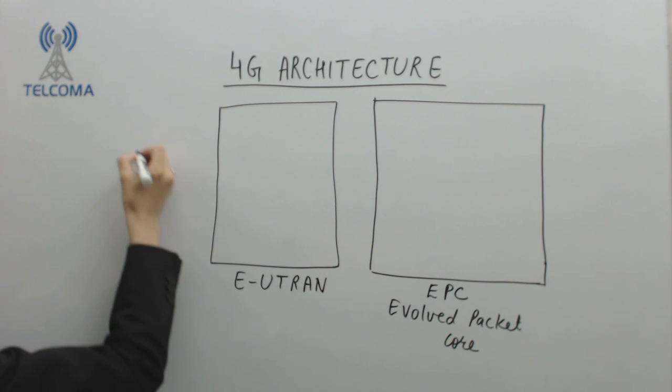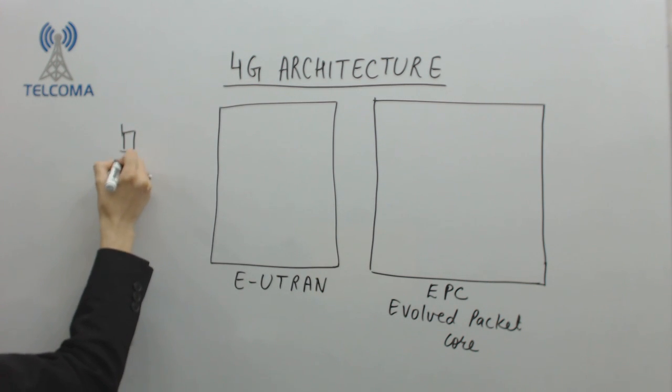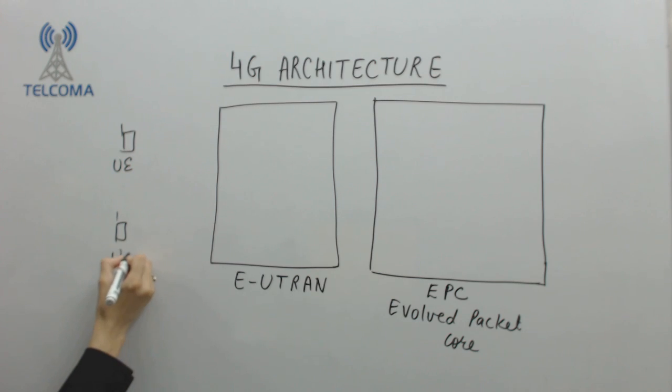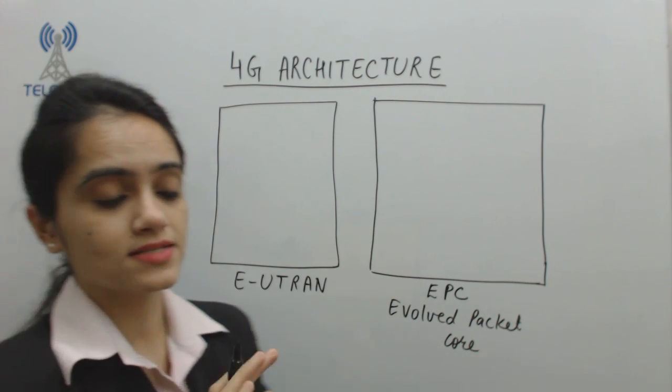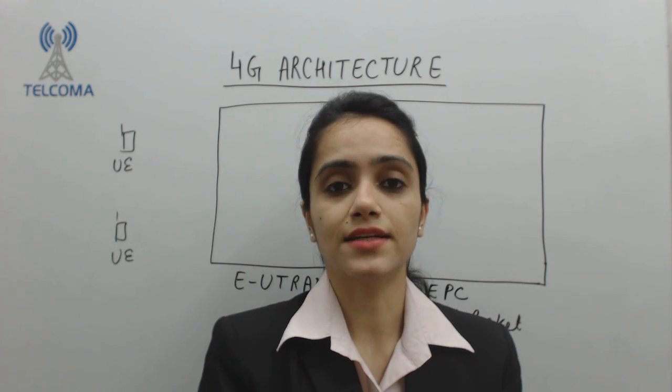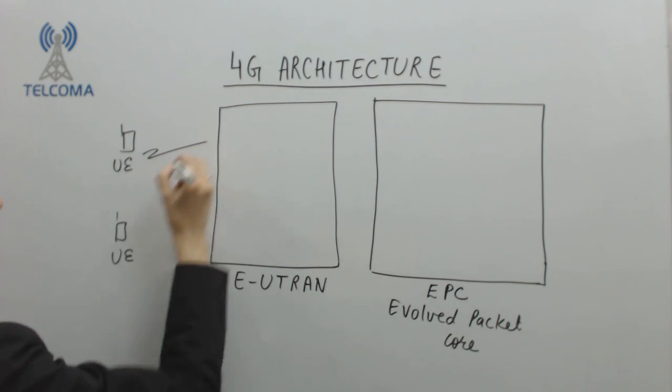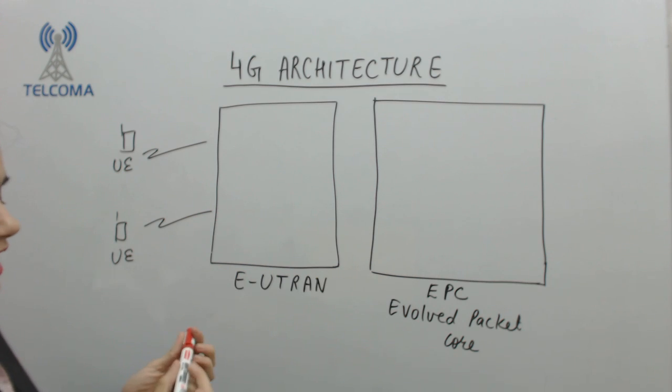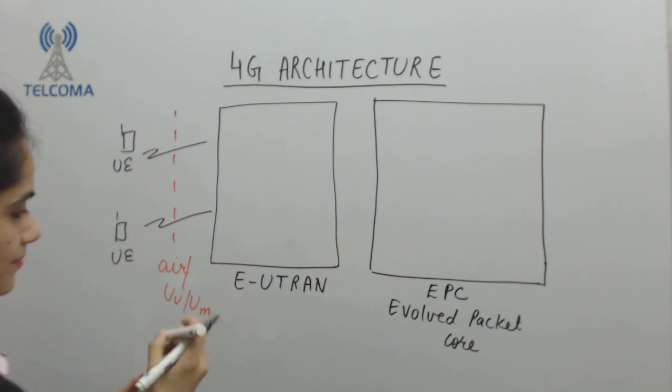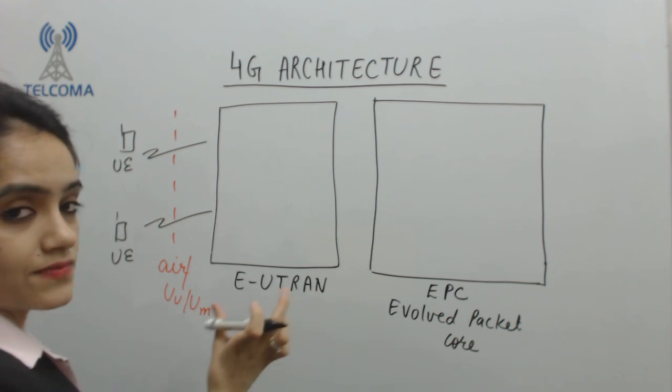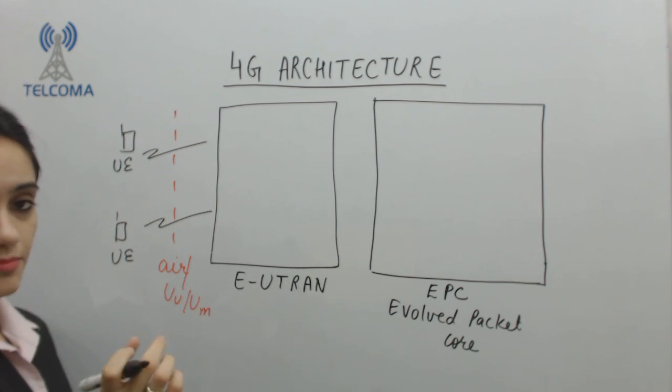We have a user equipment at this end. This user equipment is any device which can attach to the network. The user equipment can attach to the EUTRAN part through an air interface which is also known as UU or UM interface. With the help of this interface, it is connected to the EUTRAN part.